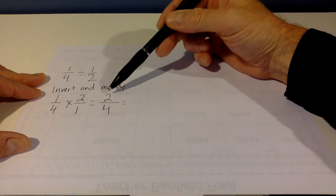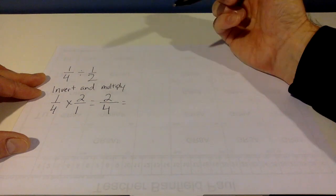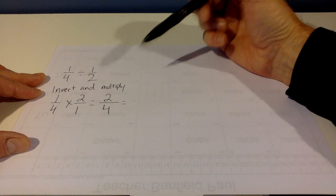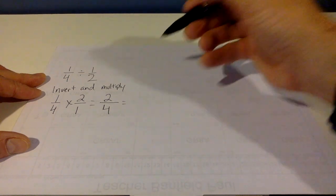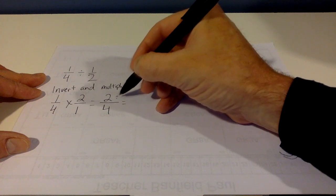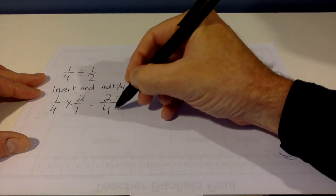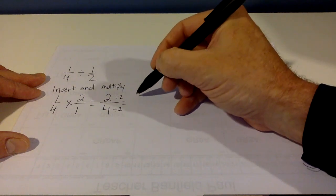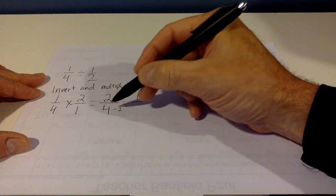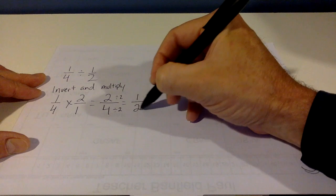So we need to think of a number that goes into both 2 and 4. So one of the numbers that goes into both 2 and 4 is 2. So we're going to divide the 2 by 2. Whatever we do to the top, we also have to do to the bottom. 2 divided by 2 is 1. 4 divided by 2 is 1.